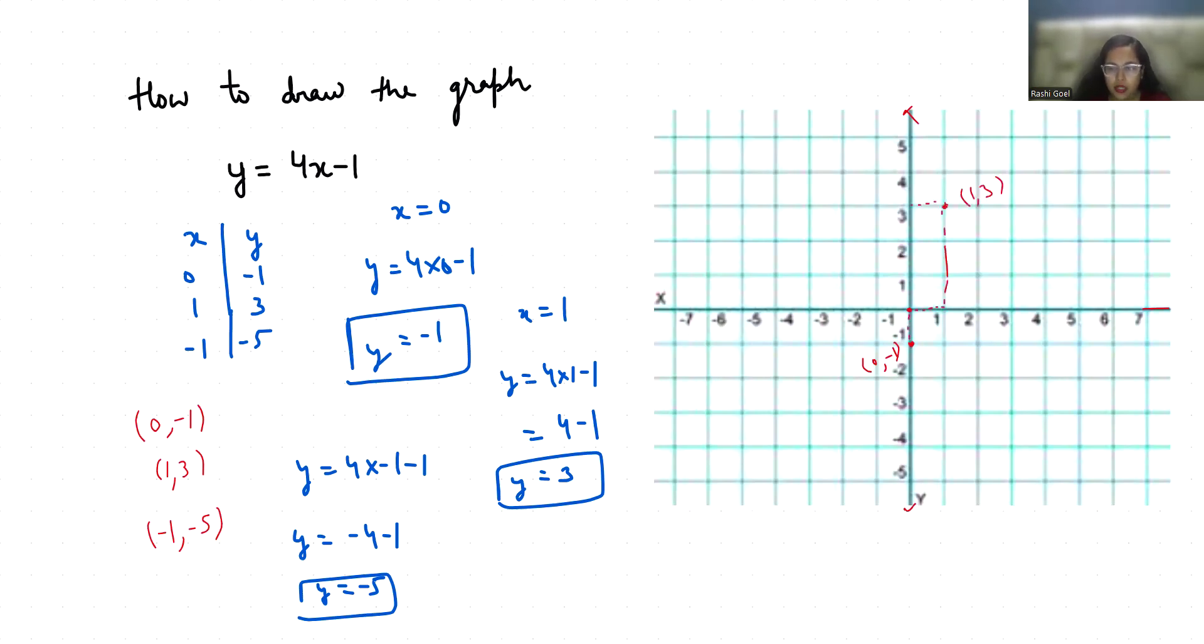Now, (-1, -5) - minus 1 on x-axis, and minus 5 on y-axis. Here's the point, (-1, -5).